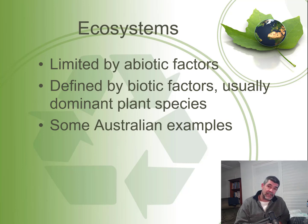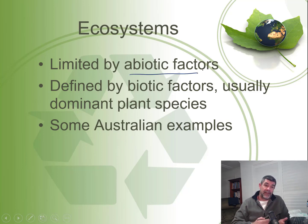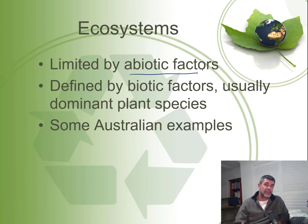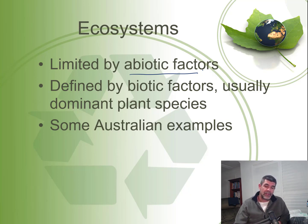Ecosystems are limited by abiotic factors. One of the key factors that affects the distribution and abundance of organisms is limiting factors — the ability of different organisms to tolerate certain conditions in their physical and chemical environment, whether it's the amount of water, whether it's temperature, whether it's the amount of light.